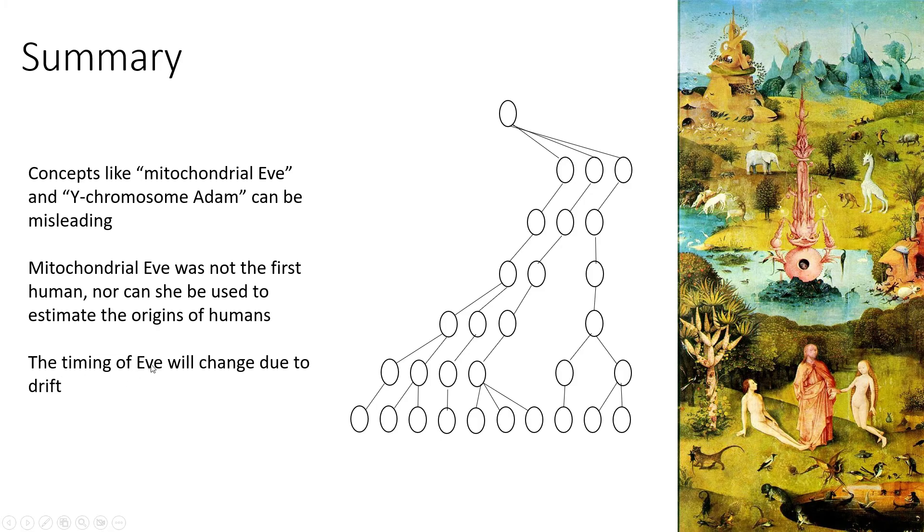And then finally, the timing of Eve will change just due to drift. So going into the future, a thousand years from now, if we were to try to reconstruct Jensen's work all over again, we could very likely get a different time. Because the lineage that descended all the way back to that common ancestor is now gone, and it's a more recent one. And that's expected to happen. That's what I just showed you, the basics of coalescent theory expect to happen.